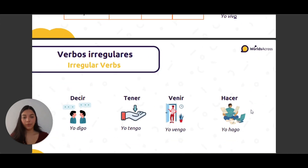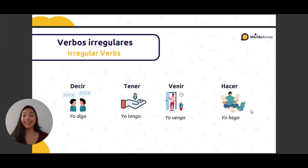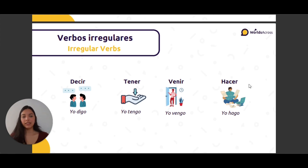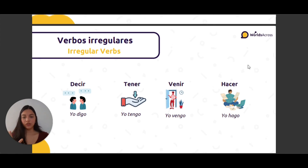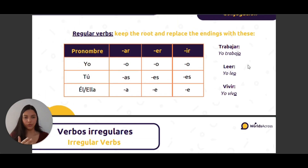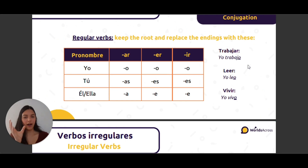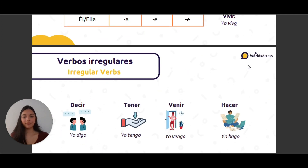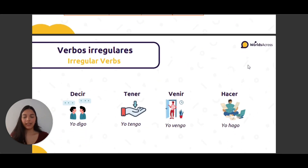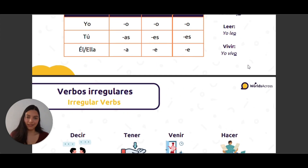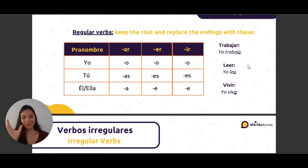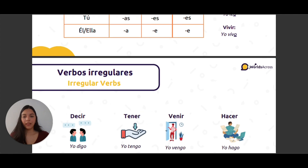And now we have irregular verbs, because these are different — they don't follow the rules like the AR, ER, and IR endings. That means they're going to end with -o or -es, because they're irregular.